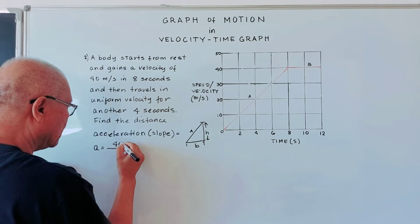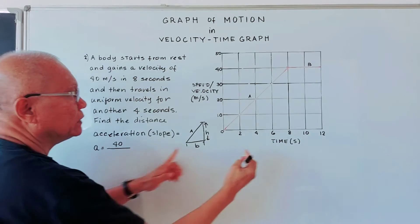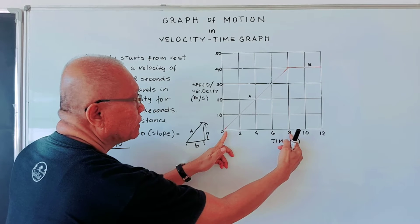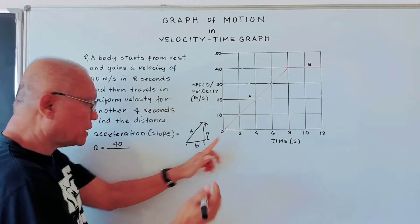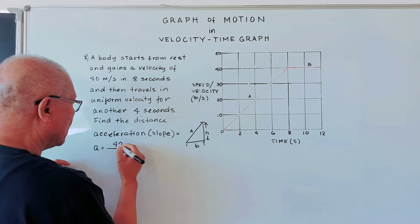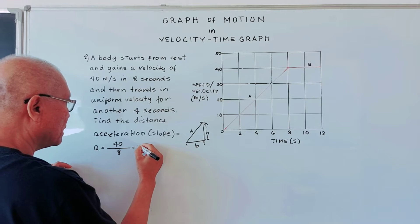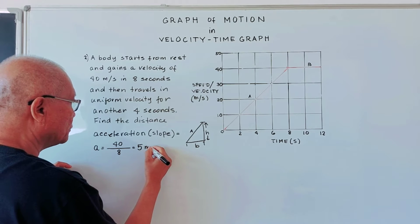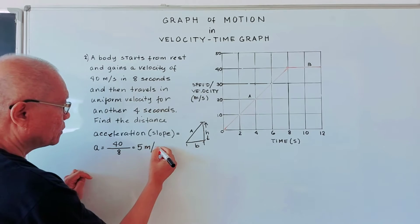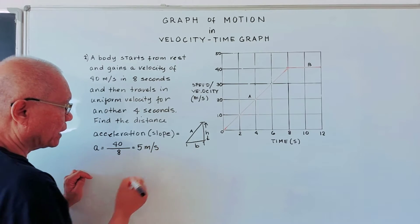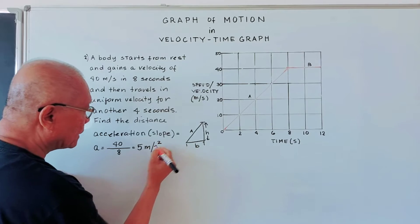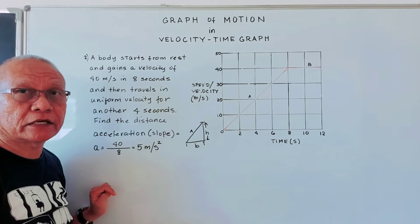So we have height 40 and base 8. We divide: 40 over 8 gives us 5 meters per second squared. That is the acceleration in region A.